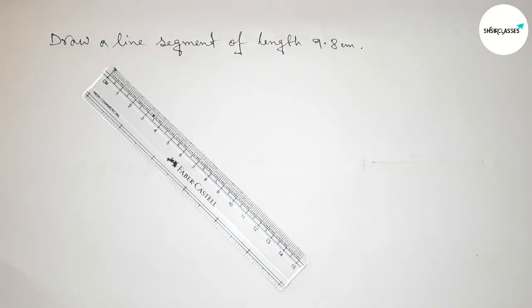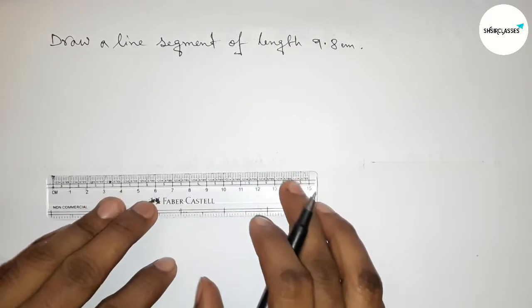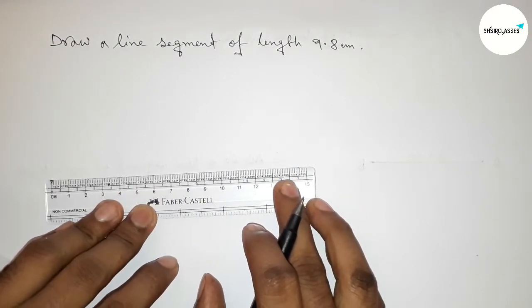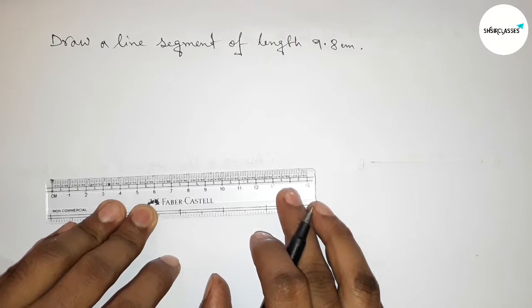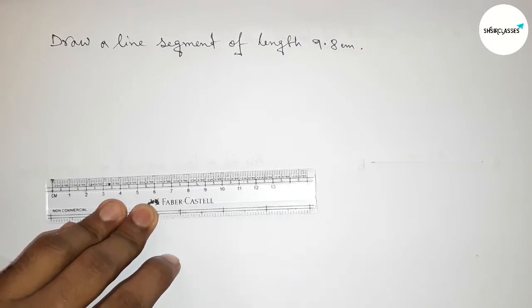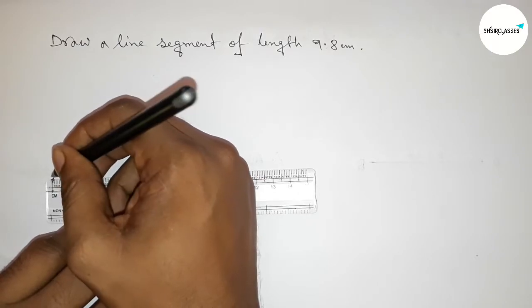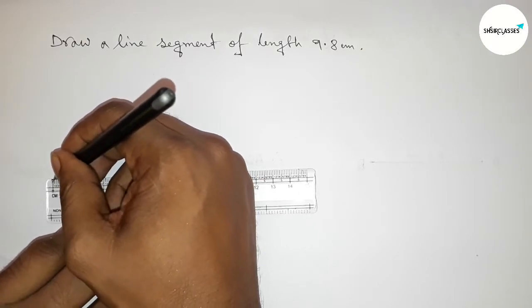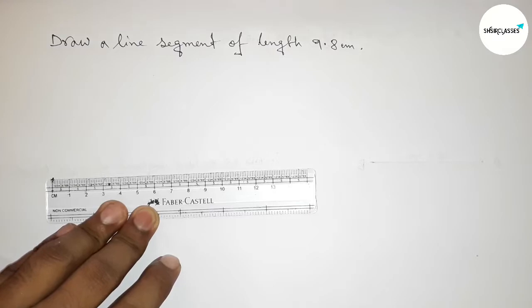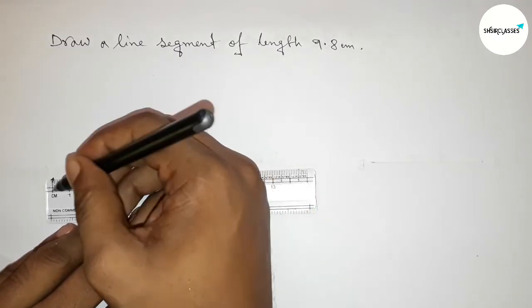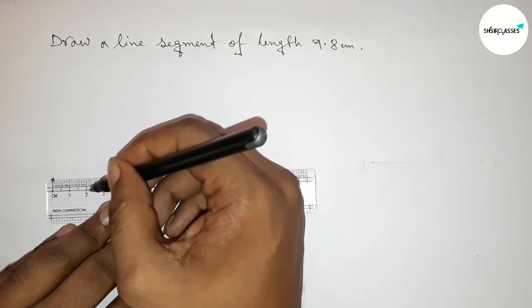First, with the help of the ruler, putting the scale here perfectly then counting 9.8 centimeter. So first counting here. This is the starting zero, so first marking here the starting zero then counting - this is zero, one, two...